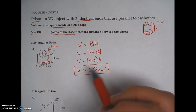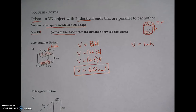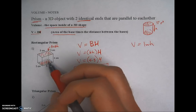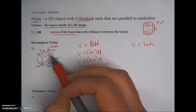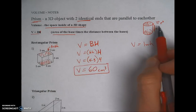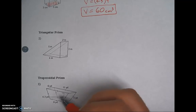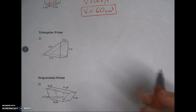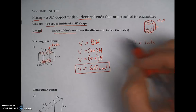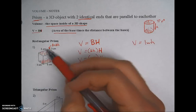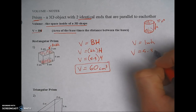Rectangular prisms have their own special formula: length times width times height. This works because in a rectangular prism you could call almost any pair of opposite sides the bases — left and right, front and back, top and bottom. Since all pairs are valid, you can just grab the three numbers you see and multiply them in any order.